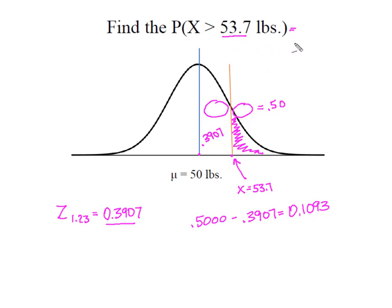Now I know that the probability of randomly selecting a bulldog and it weighing more than 53.7 pounds is 10.93%. Let's look and see what happens when we solve for an area below the mean.